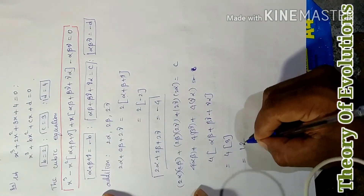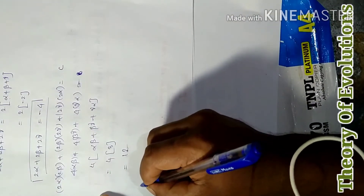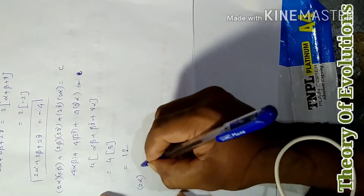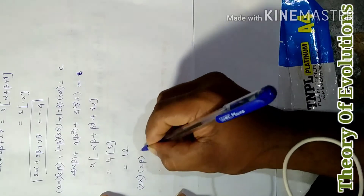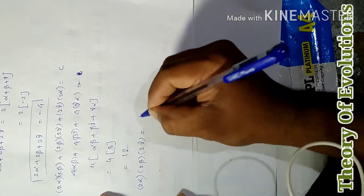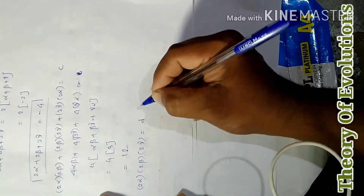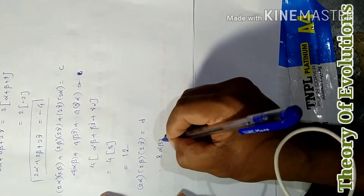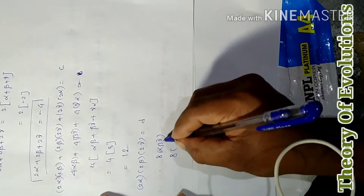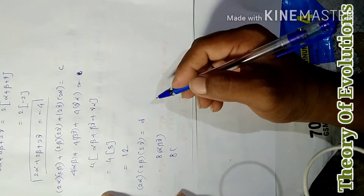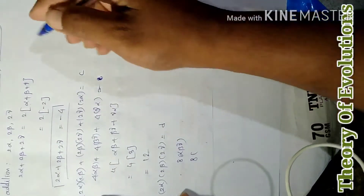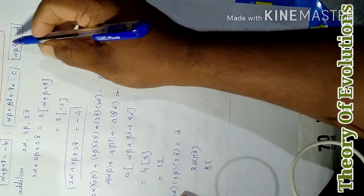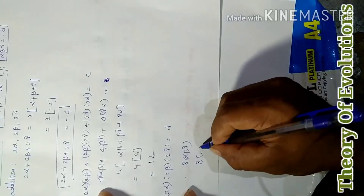The product of the new roots: 2α · 2β · 2γ = 8αβγ = 8 × (−4) = −32.